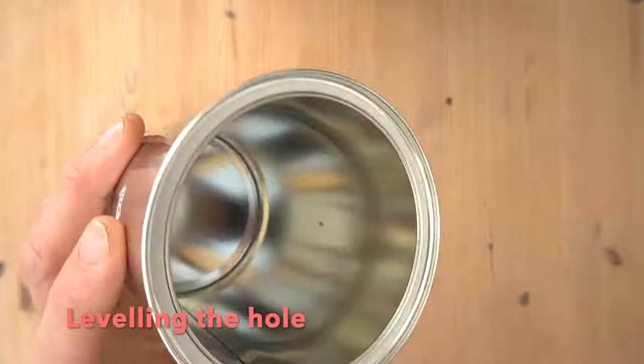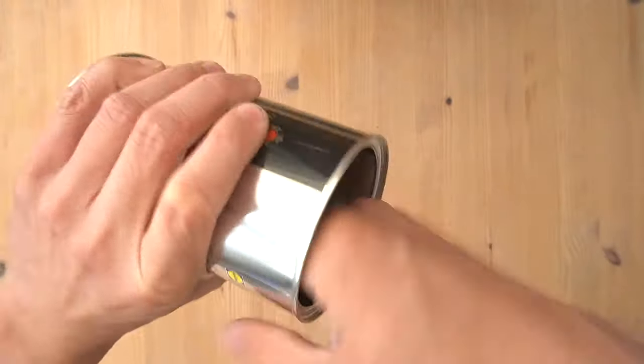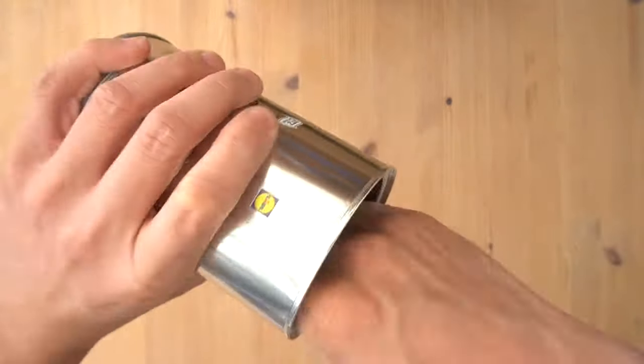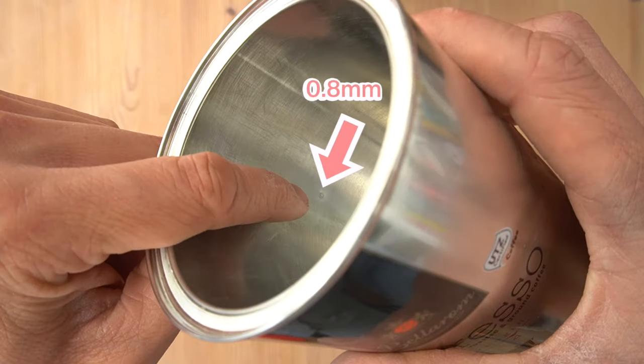I use some fine wet and dry and sanded it flat, carefully so that the hole was nice and round. After some careful sanding I realized the hole has become bigger. To double check the 0.8 millimeter hole I had made was okay.